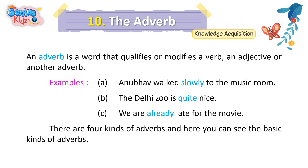Examples: A. Anubhav walked slowly to the music room. B. The Delhi Zoo is quite nice. C. We are already late for the movie.